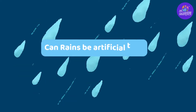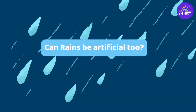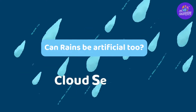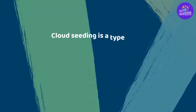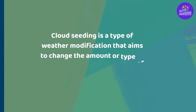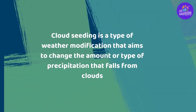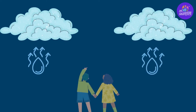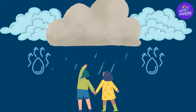Can rains be artificial too? Yes, it is also known as cloud seeding. It is a type of weather modification done to change the amount or type of precipitation that falls from clouds. In layman's language, it is a way to create moisture in the clouds so as to cause rainfall.